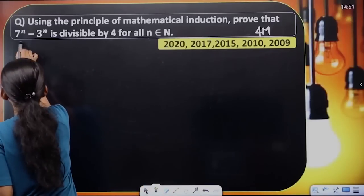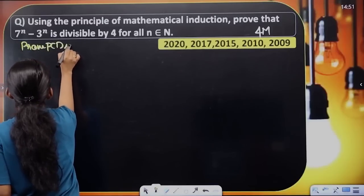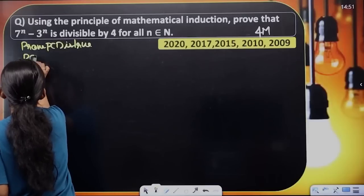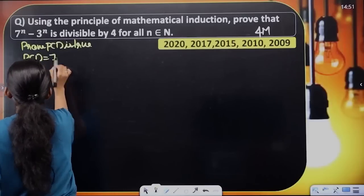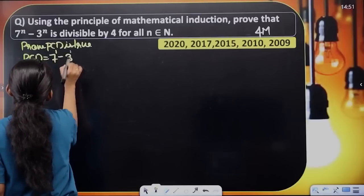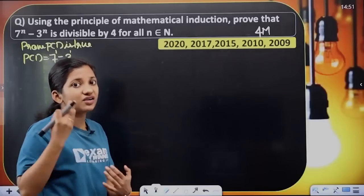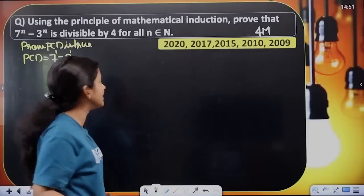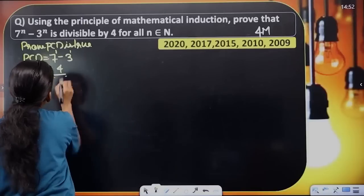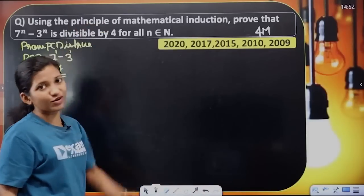In the first step, prove P of 1 is true. P of 1 equals 7 raised to 1 minus 3 raised to 1. That equals 7 raised to 1 minus 3 raised to 1. So 7 minus 3 equals 4. P of 1 equals 4. We have proved P of 1 is true because it is divisible by 4.